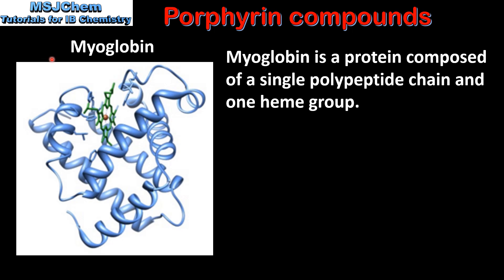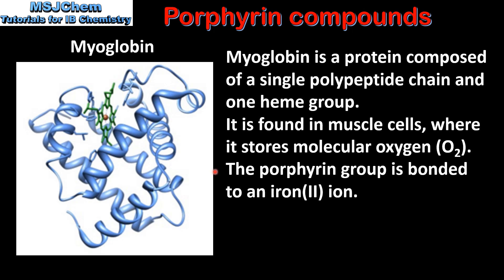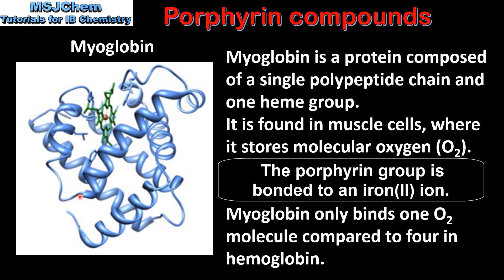Next we look at the structure of myoglobin. Myoglobin is a protein composed of a single polypeptide chain and one heme group. It is found in muscle cells where it stores molecular oxygen. In myoglobin the porphyrin group is bonded to an Fe²⁺ ion. Myoglobin only binds one oxygen molecule compared to four oxygen molecules in hemoglobin. Here we can see the structure of myoglobin — it is composed of a single polypeptide chain with one heme group.